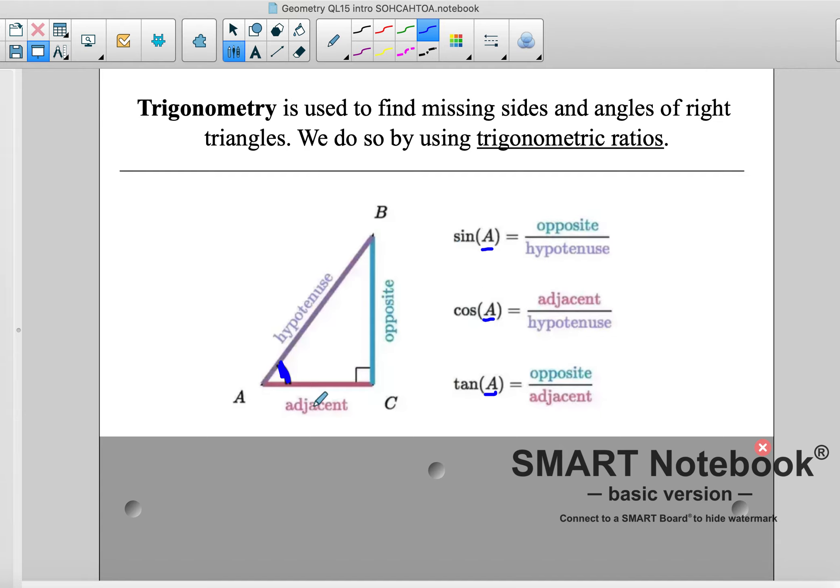And that means that we are focused specifically on this angle A. If we were looking at B, then we'd be focused on that, and that would be our reference angle, and these things would be different, and we'll get to that in the future. But right now, all we're looking at is this angle A. This is our reference angle.